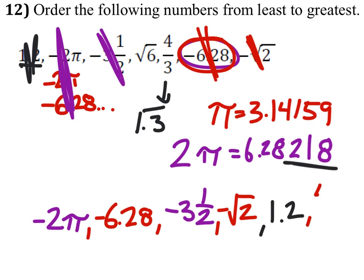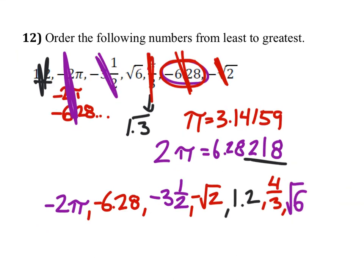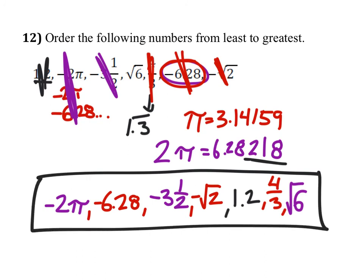And then we've got 4/3, which we use. And by the process of elimination, we have only the square root of 6 remaining. And we have now our final answer, in order from least to greatest.